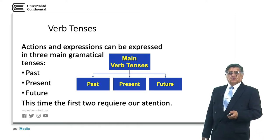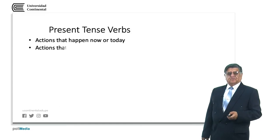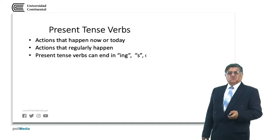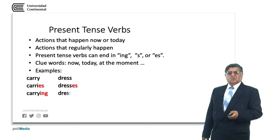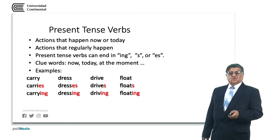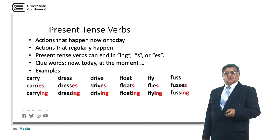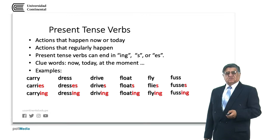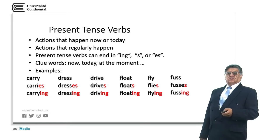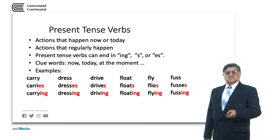This time we are going to work with the past and the present. Actions that happen now or today are in the present tense. Actions that regularly happen. Most of the present tense verbs can end in -ing or -es. We have some clue words such as today, at the moment, etc. Examples of verbs in the present tense are: carry — that is the simple form; carries — that is the third singular form; and carrying — that is the progressive or continuous form, also known as gerund.